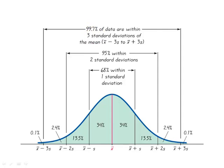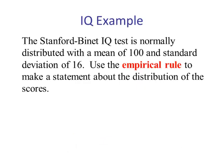Now let's do an example. The Stanford-Binet IQ test is normally distributed with a mean of 100 and a standard deviation of 16. We'll use the empirical rule to make a statement about the distribution of the scores. Since we know this is normally distributed, it's bell-shaped, with mean 100 and standard deviation 16.